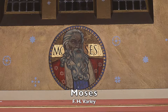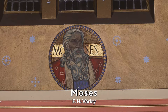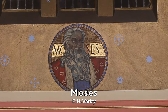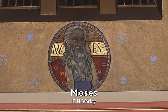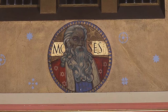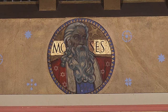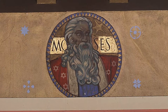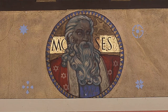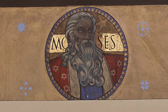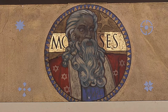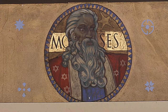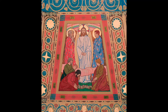The first one is Moses, known as the Lawgiver. He gave us the Ten Commandments, and it's interesting that we have another painting of Moses here in the church, so it's easy for someone to compare the painting that Varley did with the one that J.E.H. MacDonald did. Moses appears in the painting of the Transfiguration above the altar.